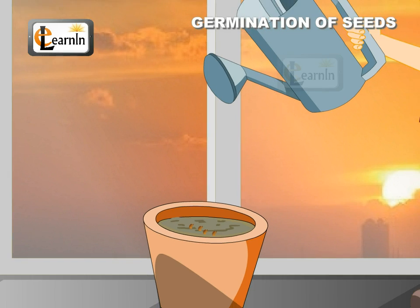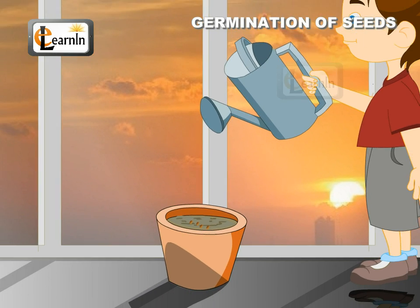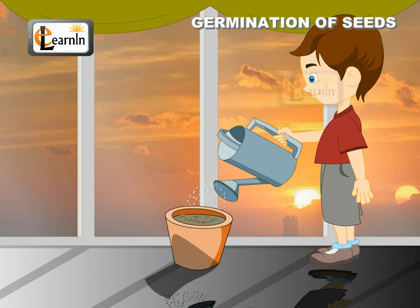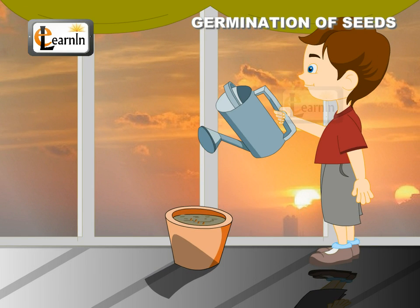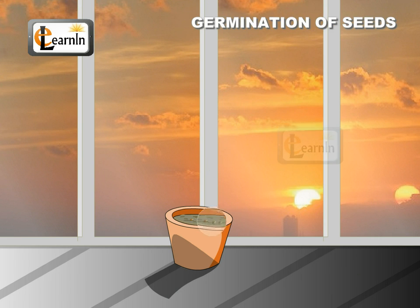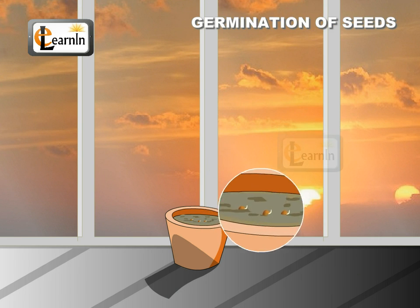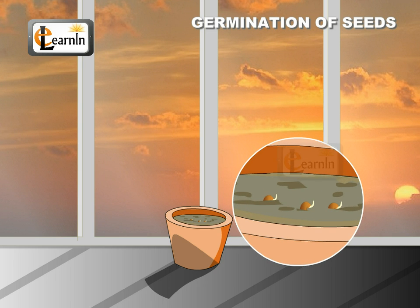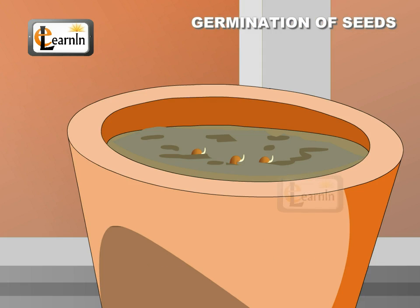You can place the pot on the windowsill. Now add a little amount of water to moisten the soil. You have to water the pot for a few days. After a week, you will notice a tiny plant sprouting out of the seed.